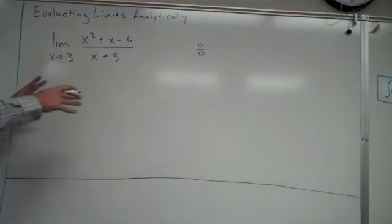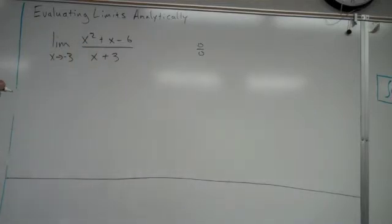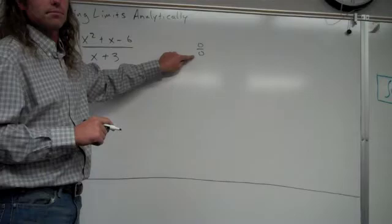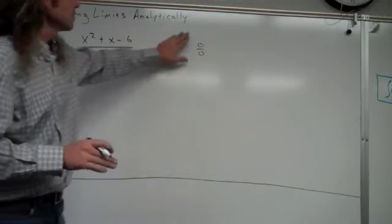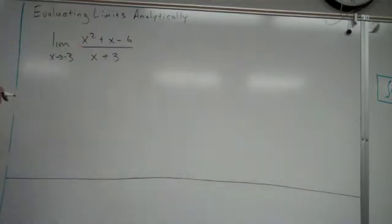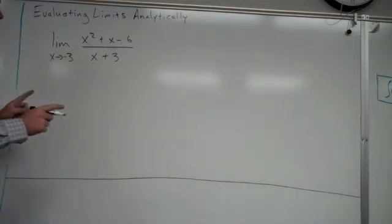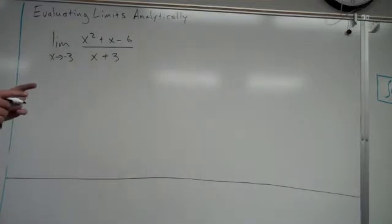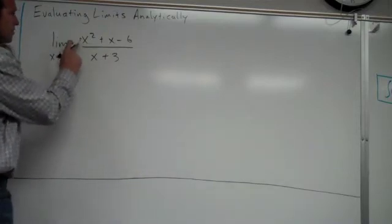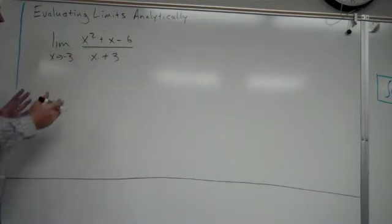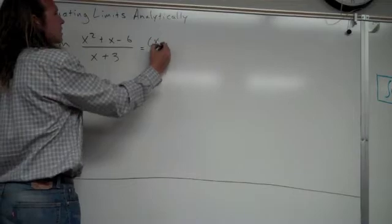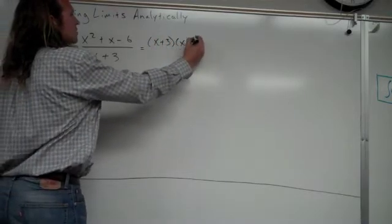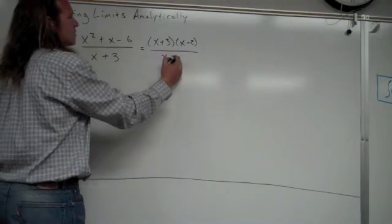That tells us, chances are, we can somehow manipulate this to find the limit. Being 0 over 0 is very important, because eventually we will get it so that it's maybe like 5 over 0, and that tells us something different. We didn't just get the answer like in the previous couple examples, but it told us something we can manipulate probably. So, in this case, this is a factoring-out method. Factor out the top and bottom completely. The top factors into x plus 3 times x minus 2. The bottom is already factored, just x plus 3.